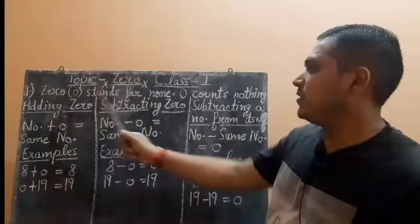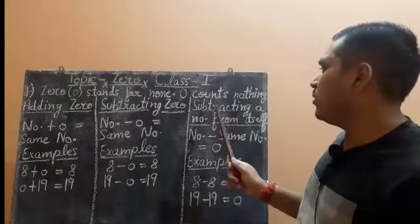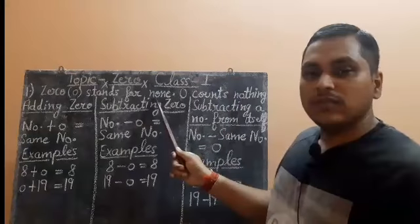Now what is zero? Zero stands for none. Zero counts nothing. What does it mean?